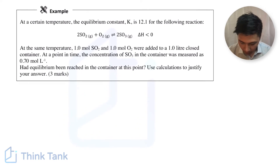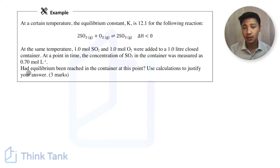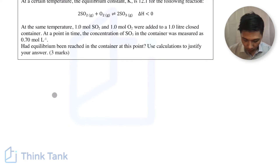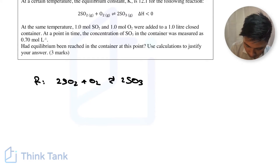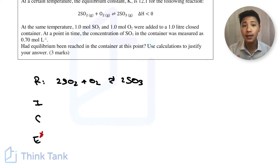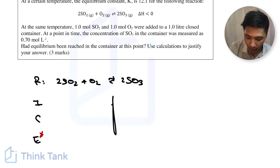With this question we should already be able to deduce that we'll need a Q value calculation, because we don't know if the system is at equilibrium and we're trying to determine whether it is. There are a couple of important things to first realize. We have the initial amounts and a measured amount of sulfur trioxide, so there's probably going to be a change component to calculate. If we construct our RICE table — I like to call it a RICE table because I write the reaction at the top — we write: 2SO₂ + O₂ → 2SO₃.